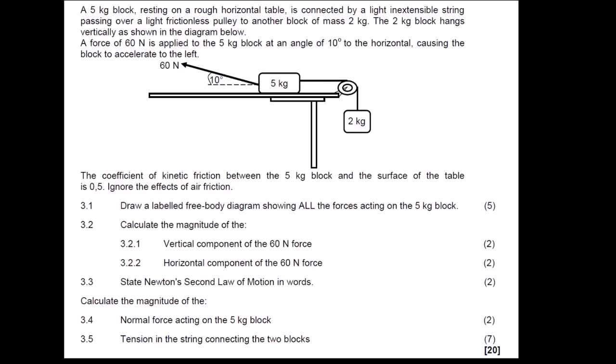A 5 kg block resting on a rough horizontal table is connected by a light inextensible string passing over a light frictionless pulley to another block of mass 2 kg. The 2 kg block hangs vertically as shown in the diagram below. A force of 60 newtons is applied to the 5 kg block at an angle of 10 degrees to the horizontal, causing the block to accelerate to the left. The coefficient of kinetic frictional force between the 5 kg block and the surface of the table is 0.5. Ignore the effects of air friction.